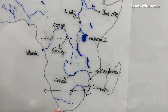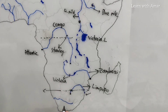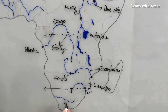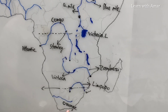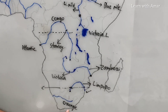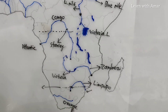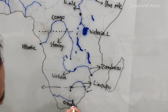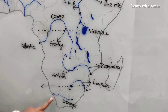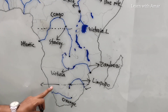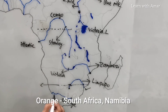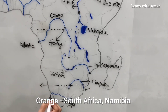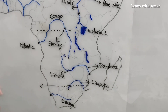Now, we add one color — orange. It is the Orange River, which originates from South Africa and moves towards Namibia and South Africa. It acts as the border between Namibia and South Africa. Finally, it joins the Atlantic Ocean.